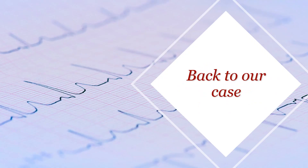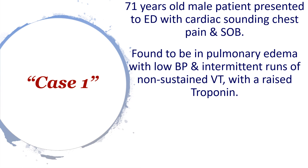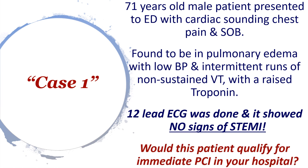Let's revisit our case. A 71-year-old male presented to ED with cardiac-sounding chest pain and shortness of breath, pulmonary edema, low blood pressure, intermittent non-sustained VTs, raised troponin, and no STEMI on ECG. The answer to our original question — would this patient qualify for immediate PCI — should now be yes. This patient is haemodynamically and electrically unstable with a non-STEMI and should go straight to the cath lab for immediate PCI within less than two hours.